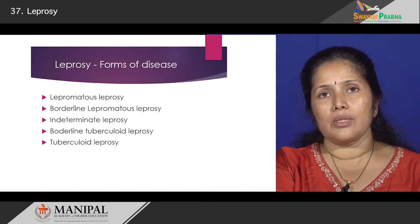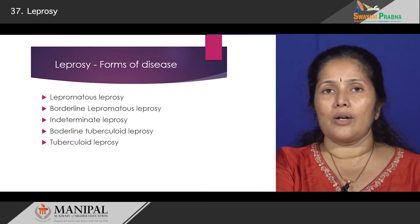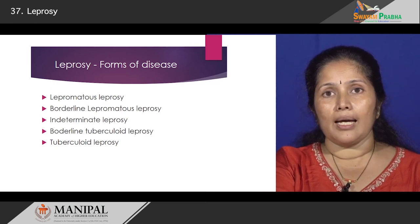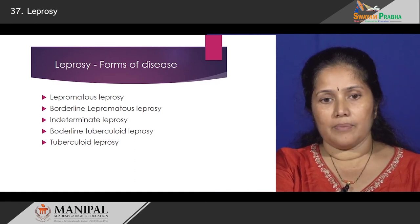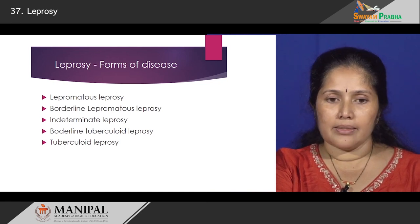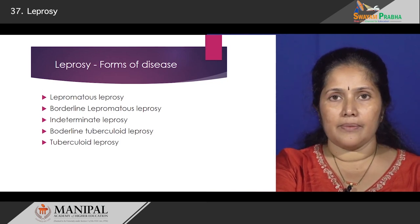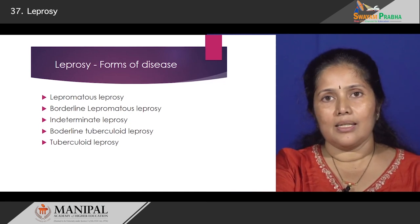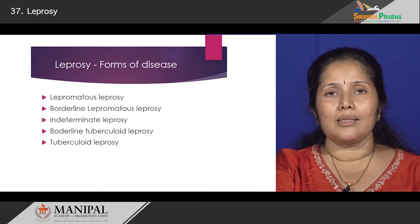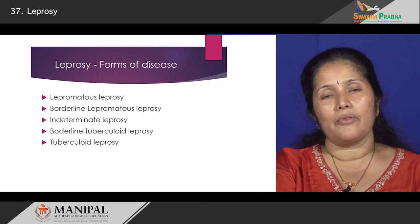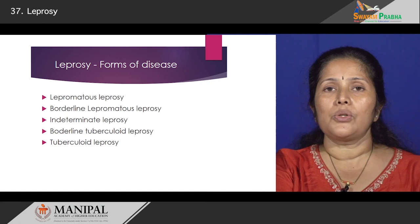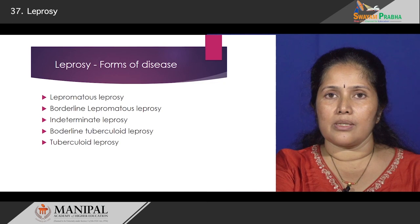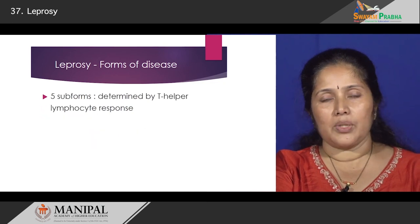There are five important categories of leprosy. Looking at the disease spectrum, you have lepromatous leprosy at one end while at the other end you have tuberculoid leprosy. In between you have borderline lepromatous, indeterminate leprosy, and borderline tuberculoid leprosy.